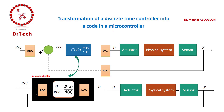The idea is to translate the transfer function into recurrence equations, which can be easily programmed in our code to calculate the control input U from the error values. We can have a single equation, two equations, three equations, and so on — the number of recurrence equations depends on the transfer function.